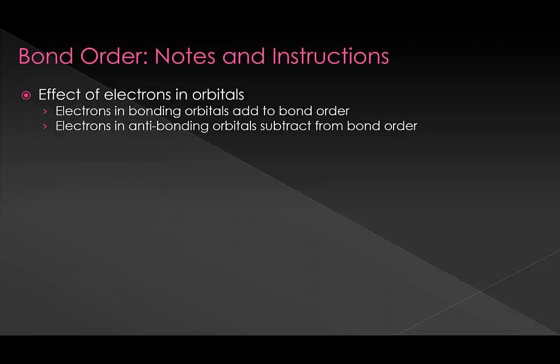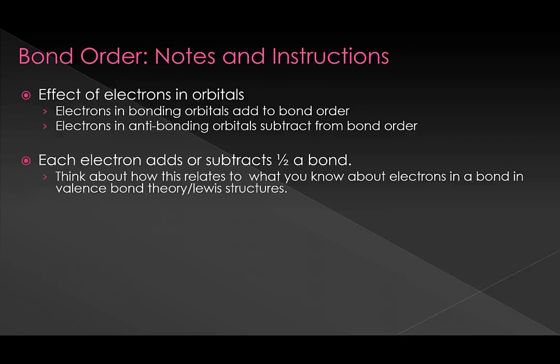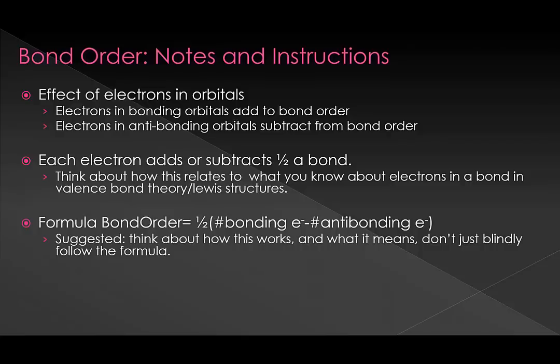So let's say that one more time. Because we know that a bond takes 2 electrons, every electron is worth one half of a bond. If an electron is placed into a bonding orbital, it adds to the bond order. If an electron is placed in an antibonding orbital, it subtracts from the bond order. So every electron in a bonding orbital adds half a bond. Every electron in an antibonding orbital subtracts half a bond.